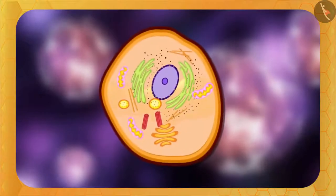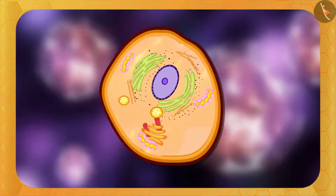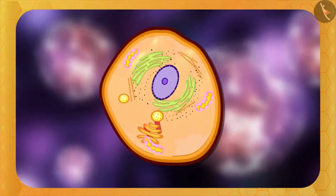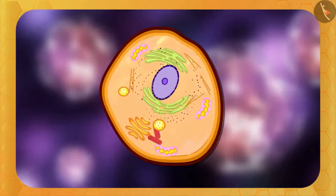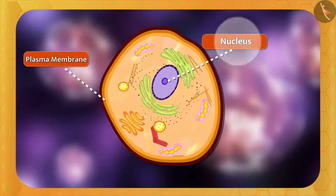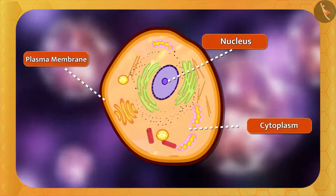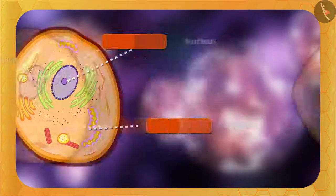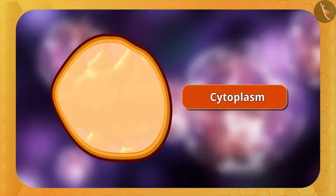Friends, what do you think? Where is cytoplasm present in a cell? We have already learned in the cell structure that the part between the nucleus and the plasma membrane in the cell is called the cytoplasm. It is a jelly-like fluid. What could be the reason for it being jelly-like?